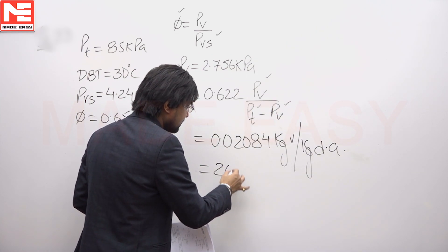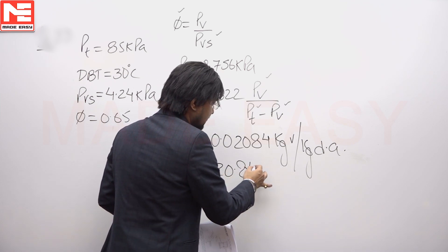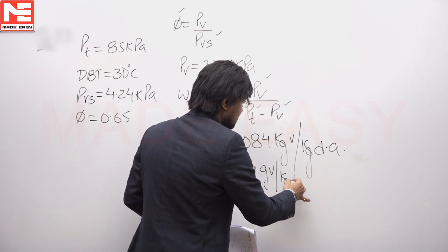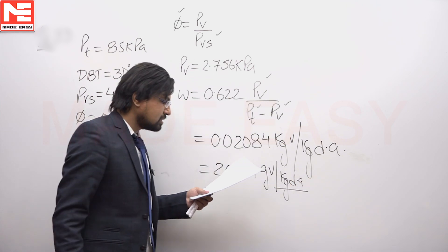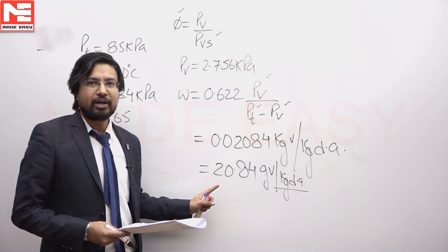So, multiplying by 1000, we get 20.84 grams of vapor per kilogram of dry air. The answer to this question is 20.84.